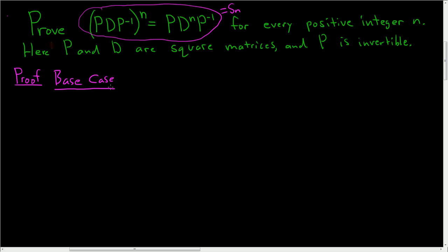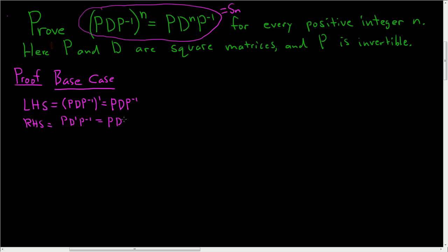Since we're showing this is true for every positive integer, we'll start with the base case by showing it's true when n equals 1. The left-hand side when n equals 1 is (PDP⁻¹)¹, which is simply PDP⁻¹. The right-hand side is PD¹P⁻¹, which is also PDP⁻¹. The left-hand side equals the right-hand side when n equals 1, so S₁ is true.